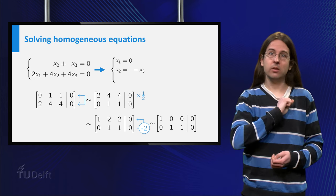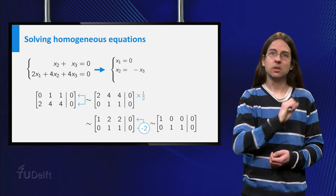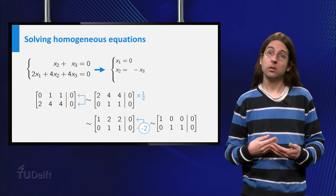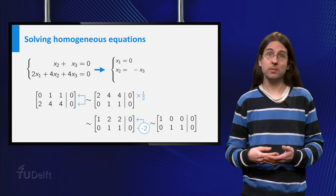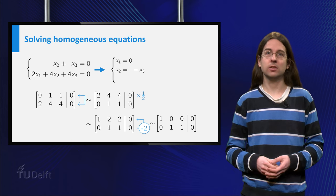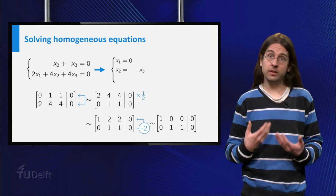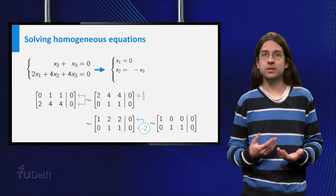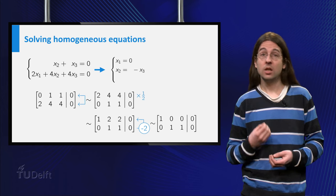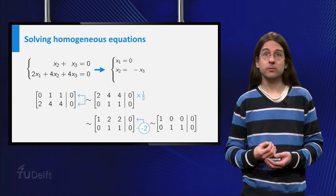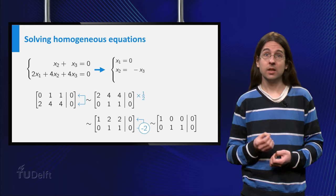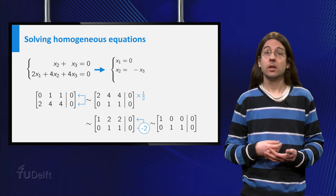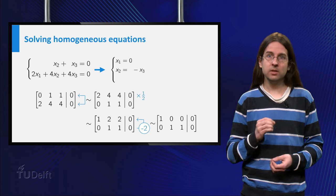Notice that the right hand column in the augmented matrix is full of zeros at first, because those are the right hand sides of the equations in the system. The three possible steps used in row reducing the matrix keep zeros in the last column. For example, if we interchange two rows, we just interchange two zeros in the last column, which does not change anything in this column. In particular, the echelon form for the augmented matrix of a homogeneous system cannot get a row of all zeros apart from the rightmost entry.